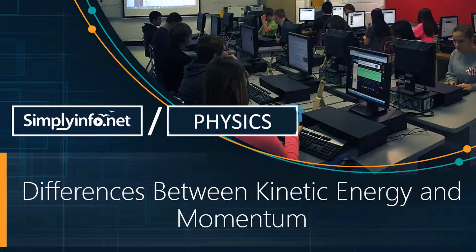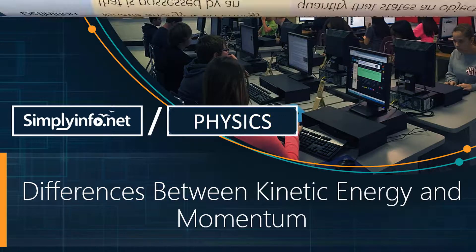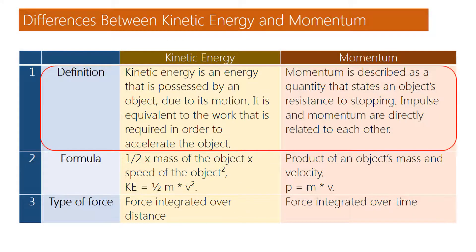Difference between kinetic energy and momentum. Definition of kinetic energy: Kinetic energy is an energy that is possessed by an object due to its motion.